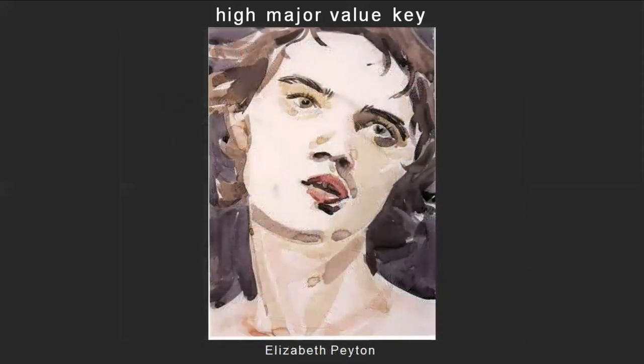Here's another example of a high major value key image, this time by the painter Elizabeth Payton — a contemporary artist who makes a lot of portraits. Here's this in full color, and we'll desaturate it again and see that yes, most of the image is composed of very light tones, although there are some darker tones as well. The majority of the area of the composition is high tone. So this is a high major value key.